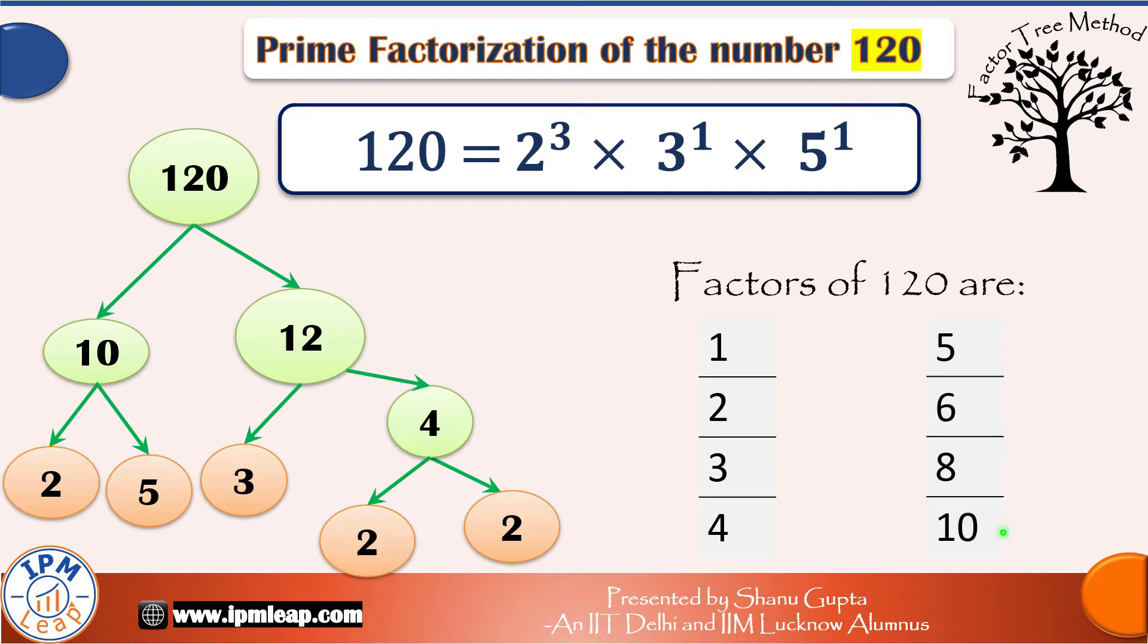That's it. And we know 1 into 120, 2 into 60, 3 into 40, 4 into 30, 5 into 24, 6 into 20, 8 into 15 and 10 into 12. They all are equal to 120. So these are factors too.